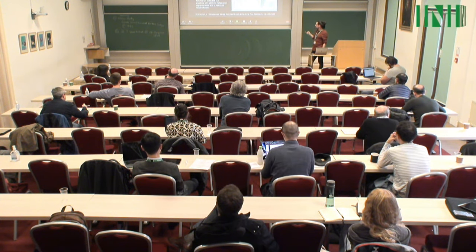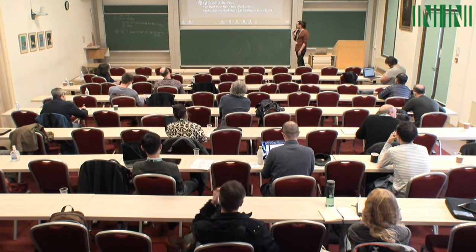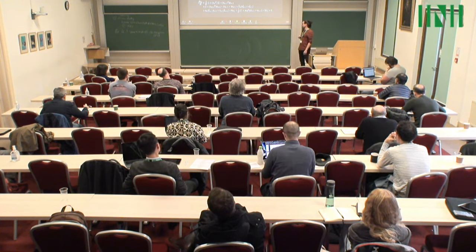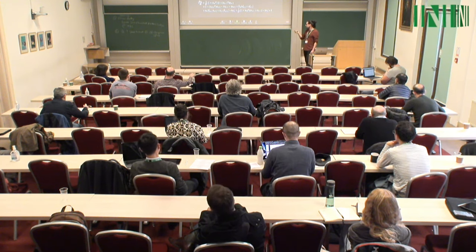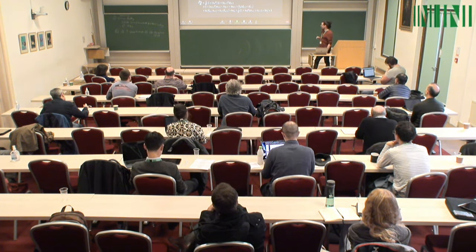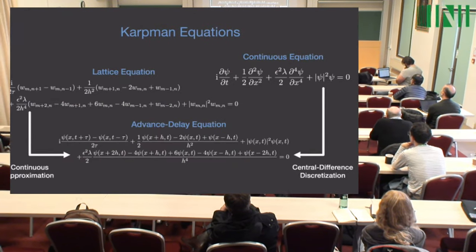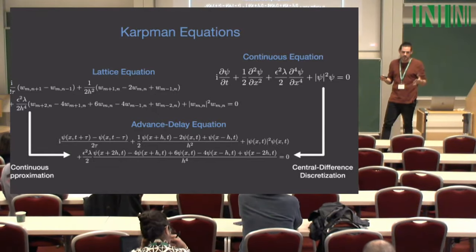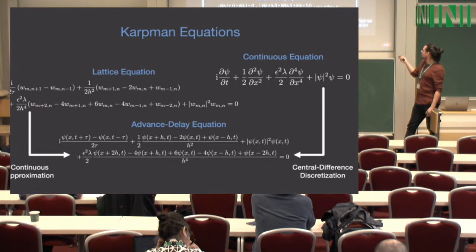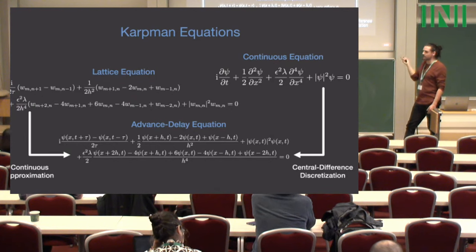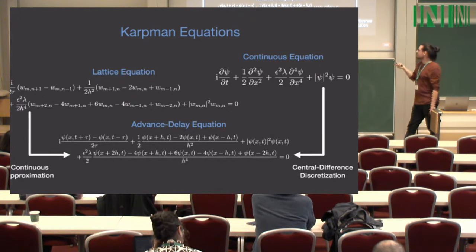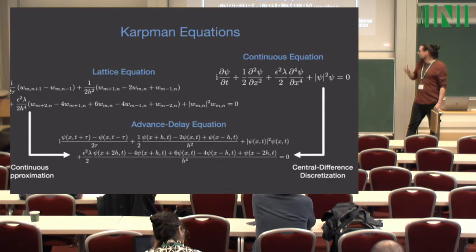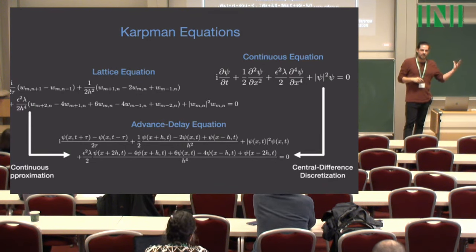So we know that in real systems these things appear. More recently, people have been looking at discrete Karpman equations, with applications in discrete optical waveguides, Bose-Einstein condensates, and the dynamics of proteins. We want to study these lattice Karpman equations. One way to study the effects of discretisation is to come up with a systematic way of discretising continuous equations. If you apply central difference discretisation to a continuous Karpman equation, you arrive at an advanced delay equation — and similarly, a lattice Karpman equation in a continuous approximation also gives an advanced delay equation.